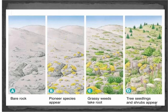Here's an example of primary succession. We have bare rock, and over time we have the pioneer species — the first species to populate the area — move in. New life starts to form, grassy weeds start to take root, grass starts to form, and over the course of several years, trees and shrubs begin to appear. It all started where there was no life before. That is an example of primary succession.